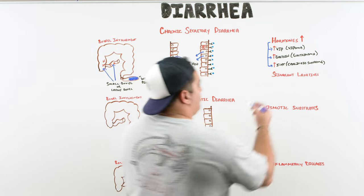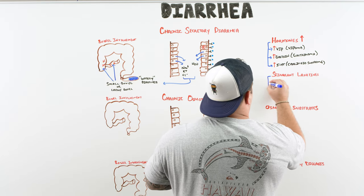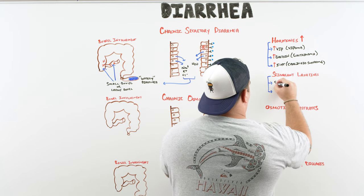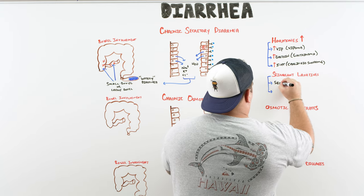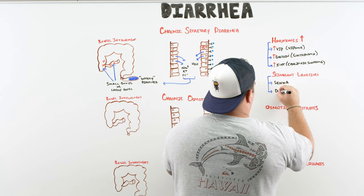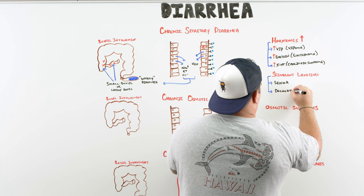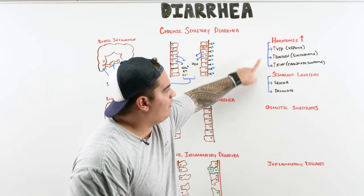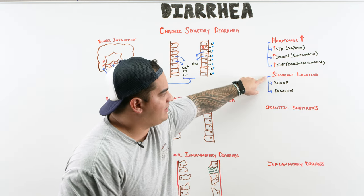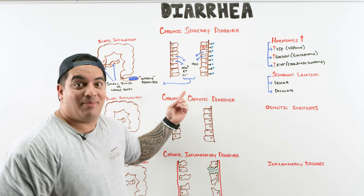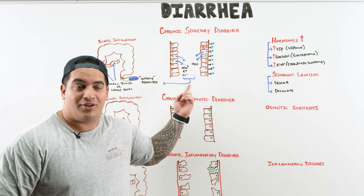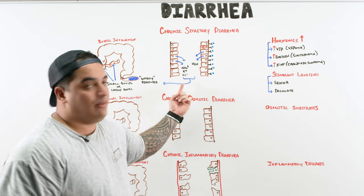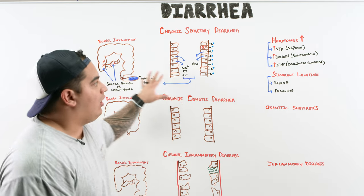The two main stimulant laxatives to know are senna and docusate, often given together. If a patient is taking stimulant laxatives regularly, this can produce that secretory diarrhea rich in electrolytes — same mechanism as the hormonal causes.